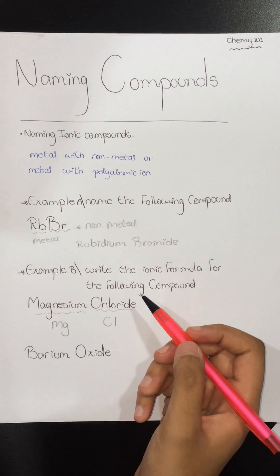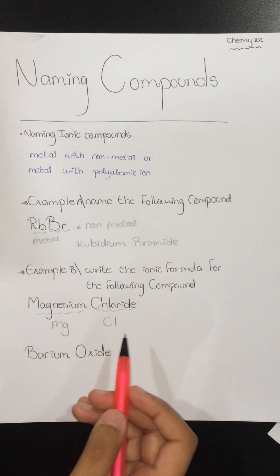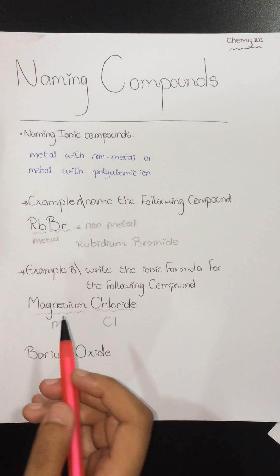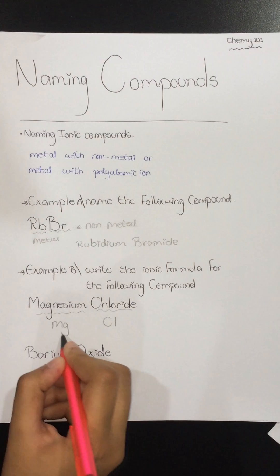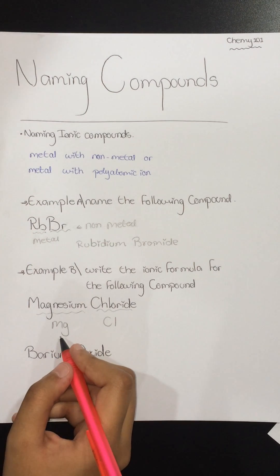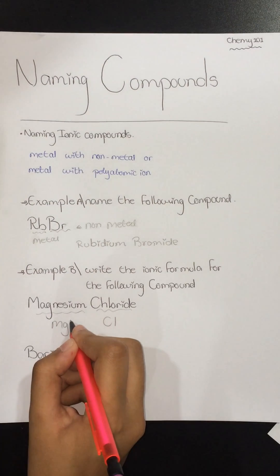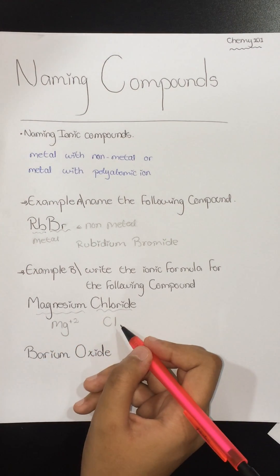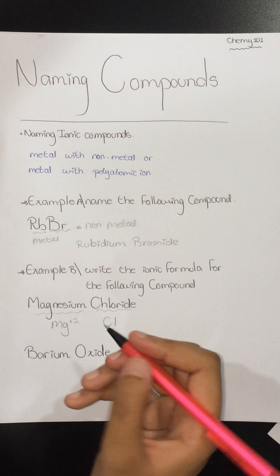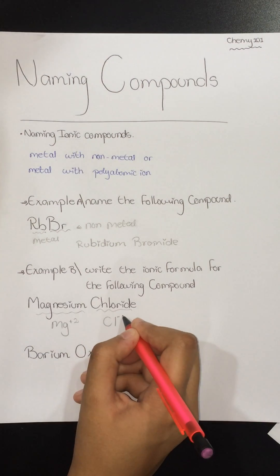Then we have to categorize each element and which group it's in. Mg is in group 2, so its charge will be plus 2. And Cl is in group 7, so it will have the charge of minus 1.